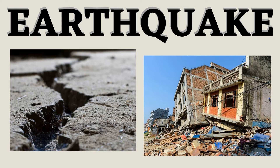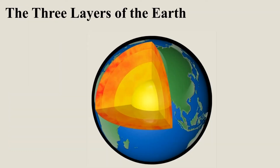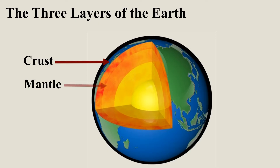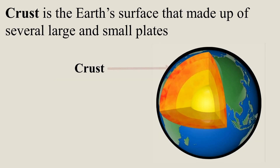Earthquake. There are three layers of the earth: crust, mantle, and core. Crust — it is the earth's surface that's made up of several large and small plates.